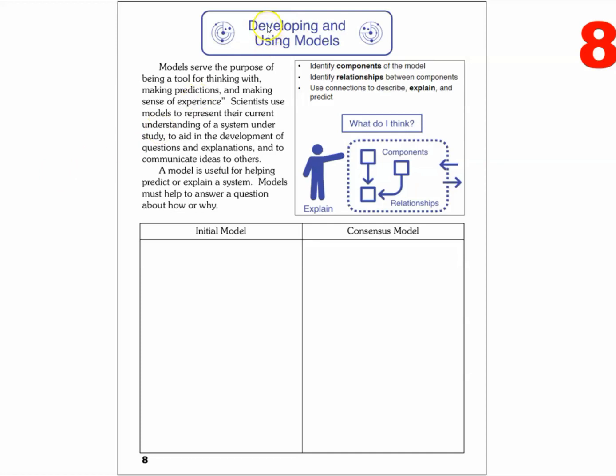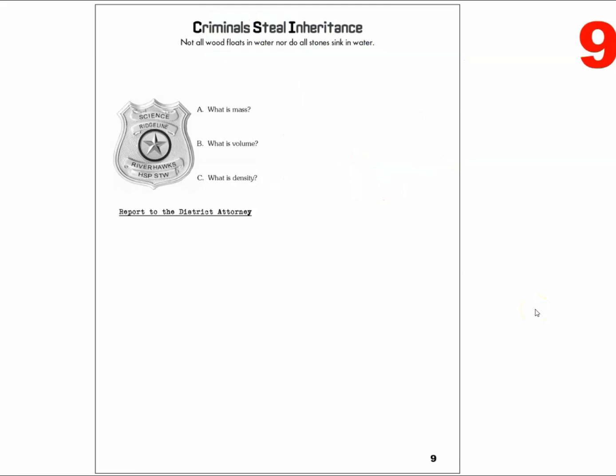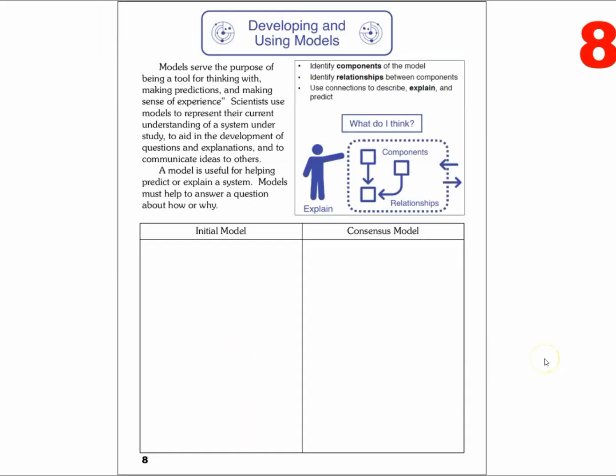Once the model has been developed, we certainly want to then use the model. The model that was developed by the consensus of the class for density was then applied in this situation where criminals steal inheritance. This is an activity that you can return to class and complete. Until then, be sure to review how to develop models and other preceding pages in your study guide that should be completed to this point.